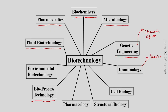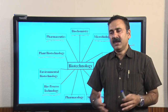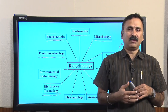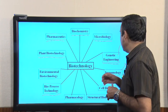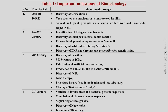Since biotechnology is a very vast field, it did not develop in a single day. It required a continuous learning process through which humans developed this field, and because of that biotechnology has many applications. One of the initial discoveries by humans is the process of fermentation — the classical example being alcohol production and curd making — which is the first documented discovery related to biotechnology.